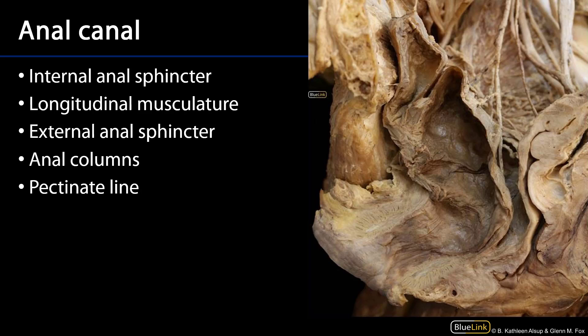With respect to the anal canal, there are a lot of interesting things to discuss. Continuing our discussion of the musculature, coming down here we have an extension of that longitudinal muscle from the rectum — sometimes called the conjoint longitudinal muscle. It's going to separate the anal sphincters, with the external anal sphincter located outside, or external, to that longitudinal muscle.